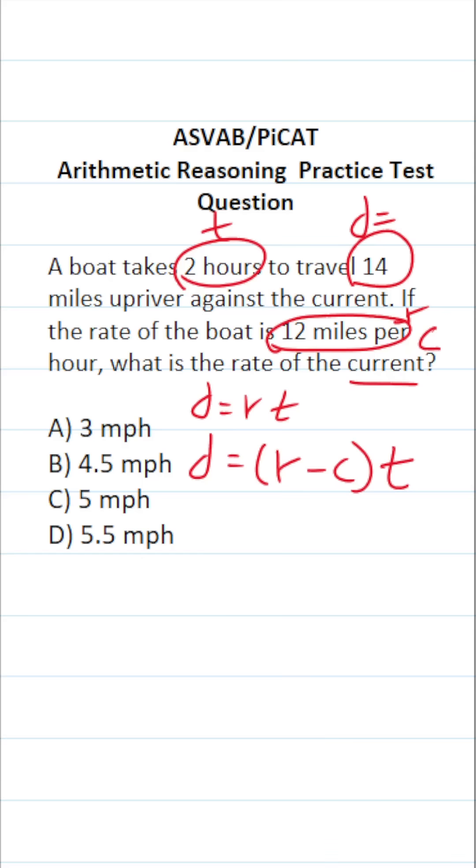So now that we've rewritten that formula, let's go ahead and plug in our values. We know distance is 14. We know the boat travels at a rate of 12 miles per hour. We're going to be solving for C and we know it took two hours for the boat to travel those 14 miles.